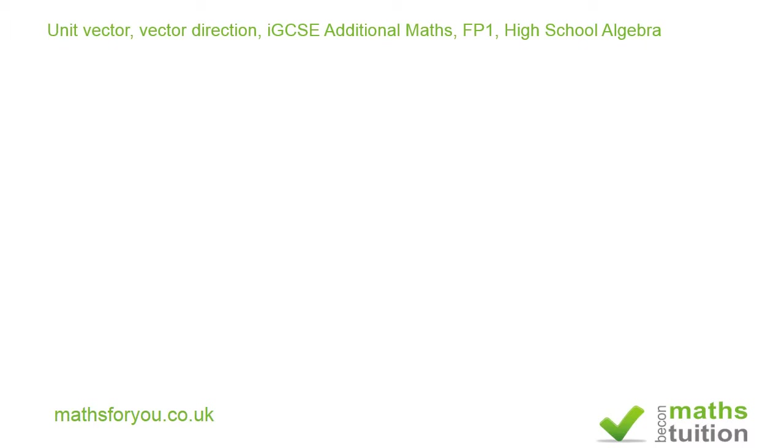There are two parts to this question. The first part carries just two marks. It says given that vector a is equal to 5i minus 12j and that vector b is equal to pi plus j.